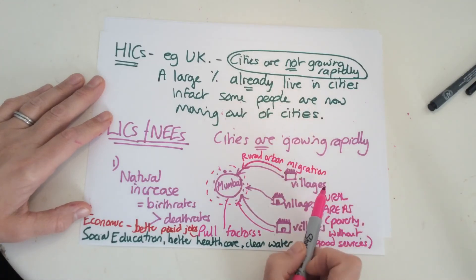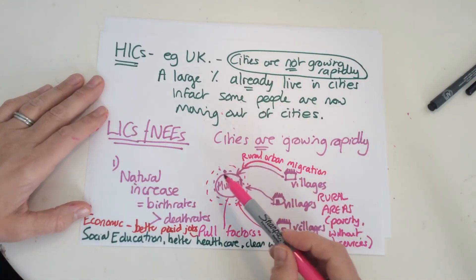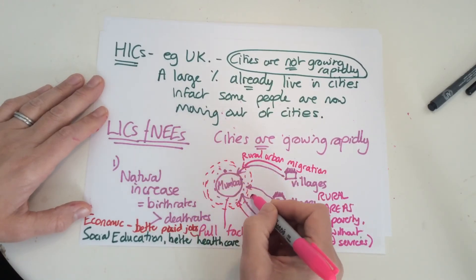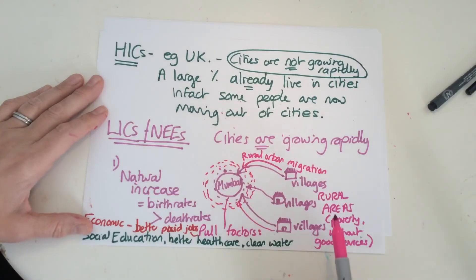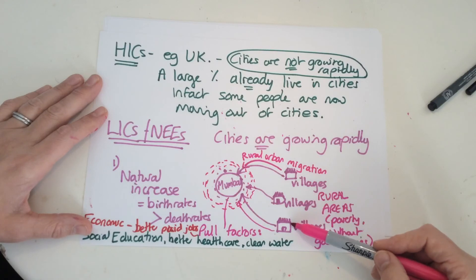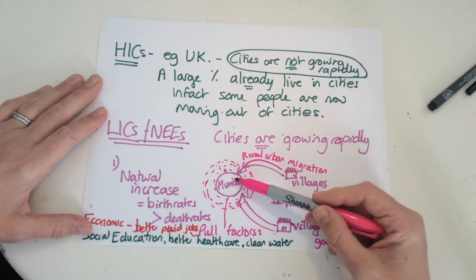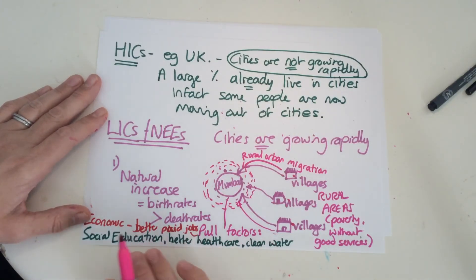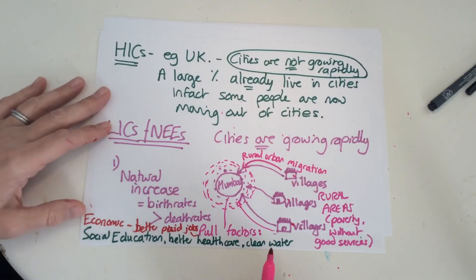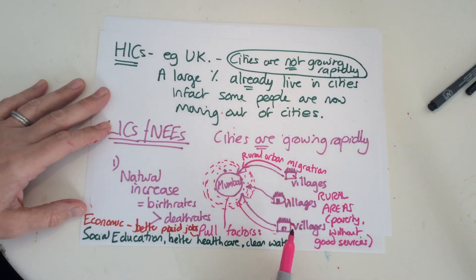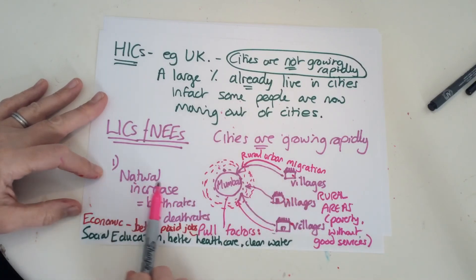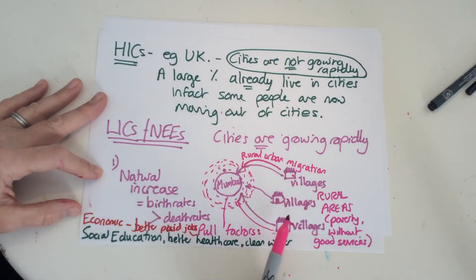So we have rural-urban migration — people moving from villages into cities like Mumbai, Jakarta, or Nairobi. These people are moving from villages in the same country, going to the city looking for better paid jobs, education, better healthcare, and clean water. They may go to stay with family. The people moving in are often in their early 20s, of childbearing age, which also feeds into population growth.